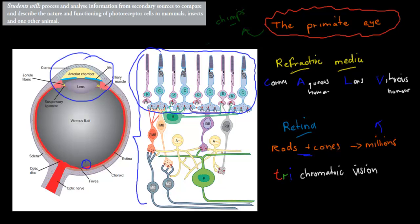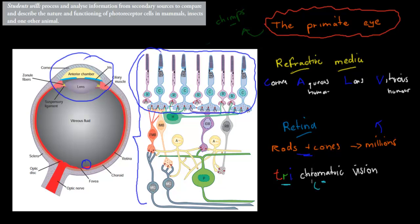And they have trichromatic vision. Tri means three — you can see it has red, green, and blue. Just like us, we have three cones: red, green, and blue. So trichromatic — chromatic means color. So they have color vision, and they have three cones to give them that color vision. And that's for basically all primates.